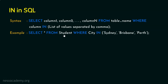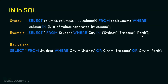For example: SELECT * FROM student WHERE city IN ('Sydney', 'Brisbane', 'Perth'). This retrieves all columns from the student table where the city is Sydney, Brisbane, or Perth. This is equivalent to: SELECT * FROM student WHERE city = 'Sydney' OR city = 'Brisbane' OR city = 'Perth'.